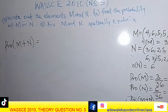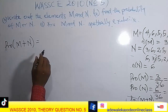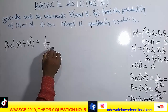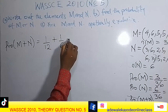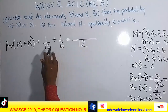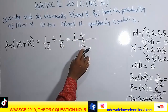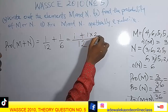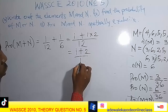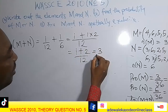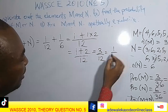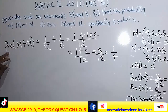So the probability of M or N equals 1/12 plus 1/6. The LCM is 12: that gives 1/12 plus 2/12, which equals 3/12. Simplifying: 3 divided by 3 is 1, and 12 divided by 3 is 4. So the probability of M or N is 1 out of 4.